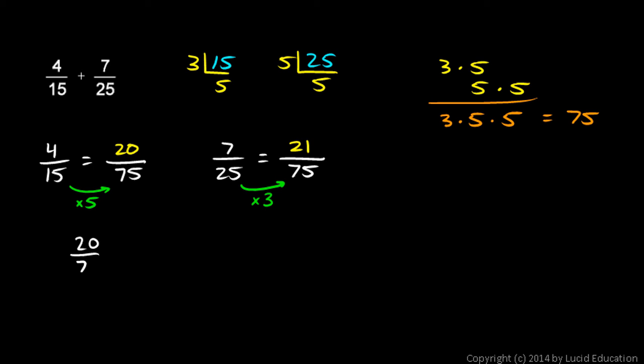20 over 75 plus 21 over 75 equals 41 over 75.